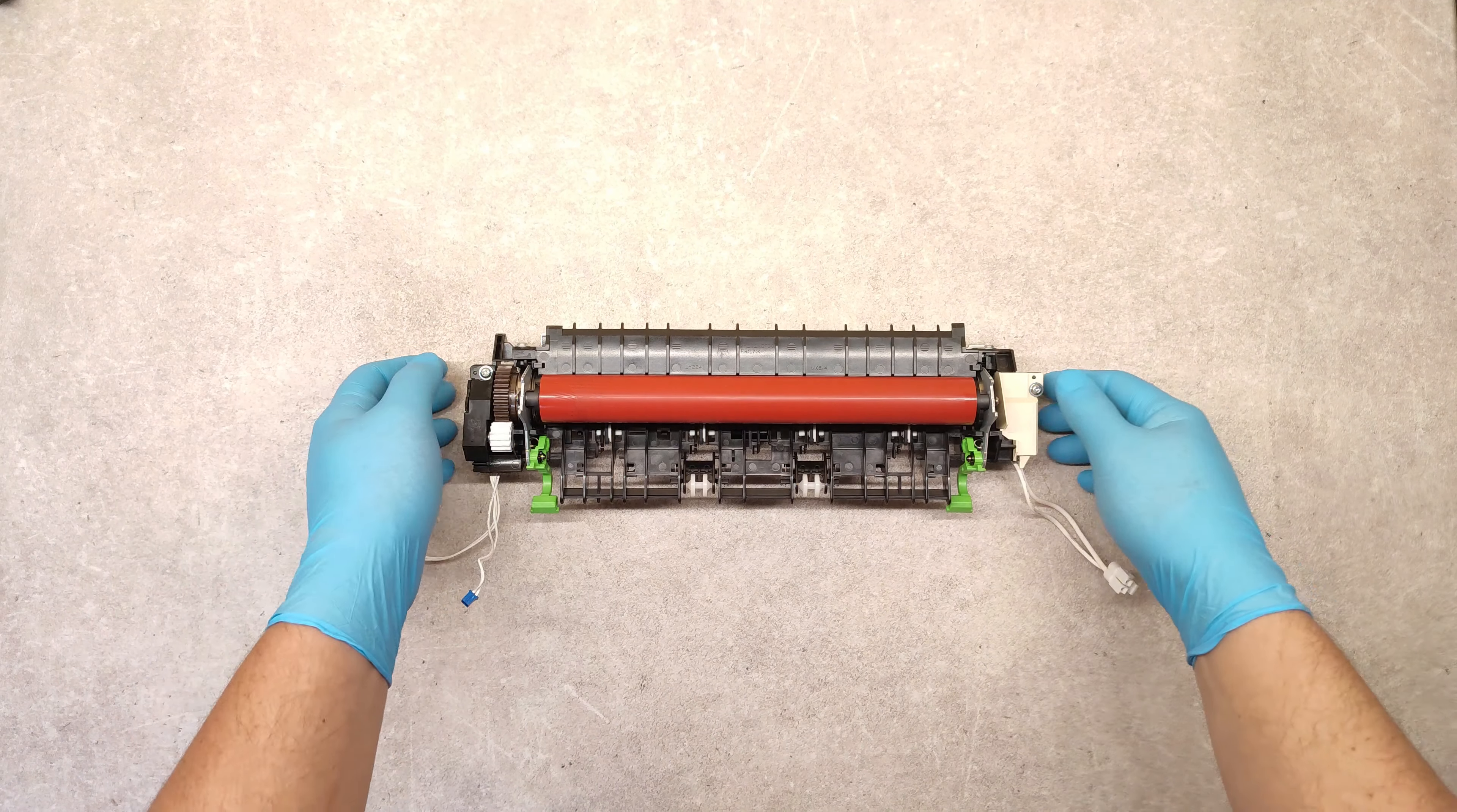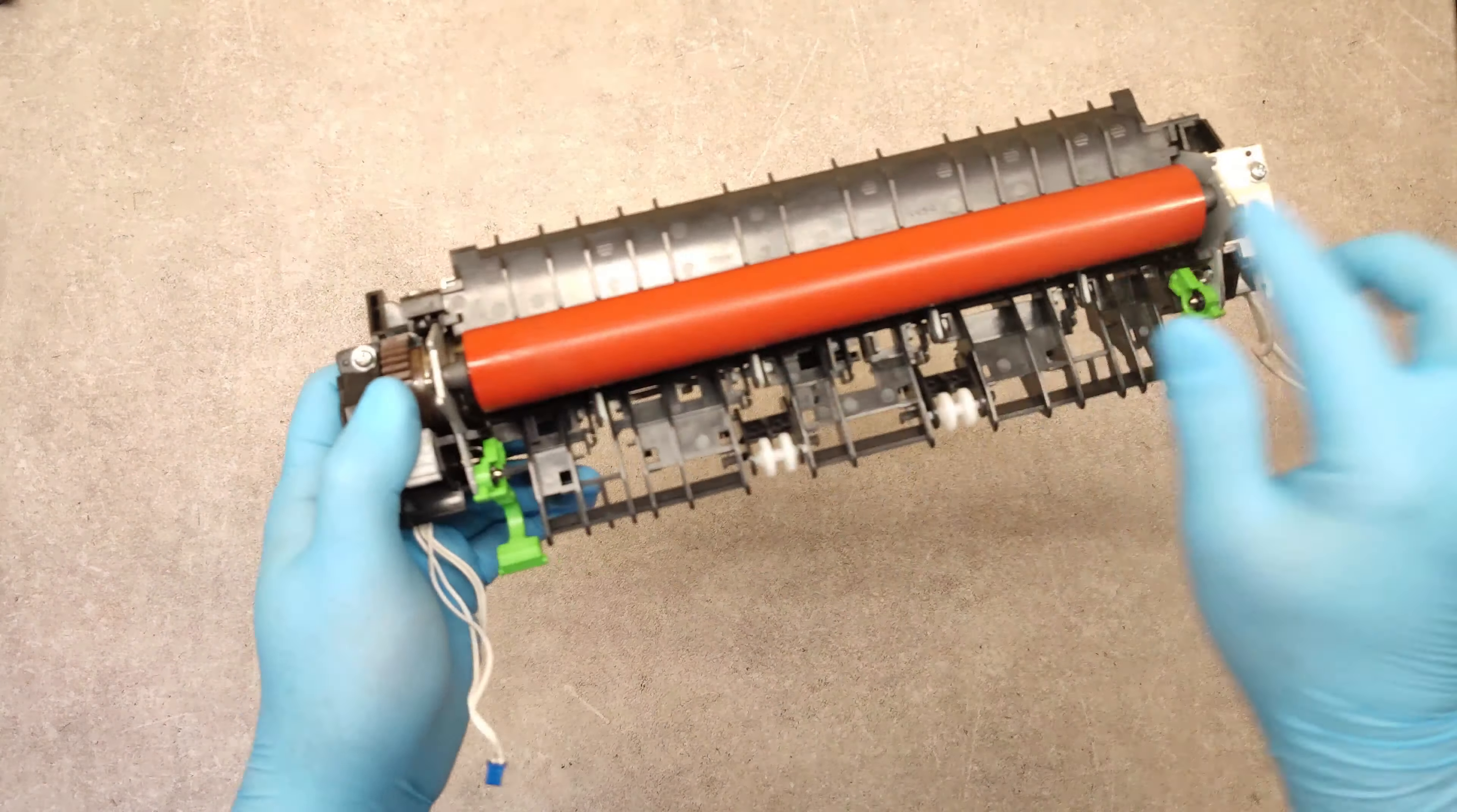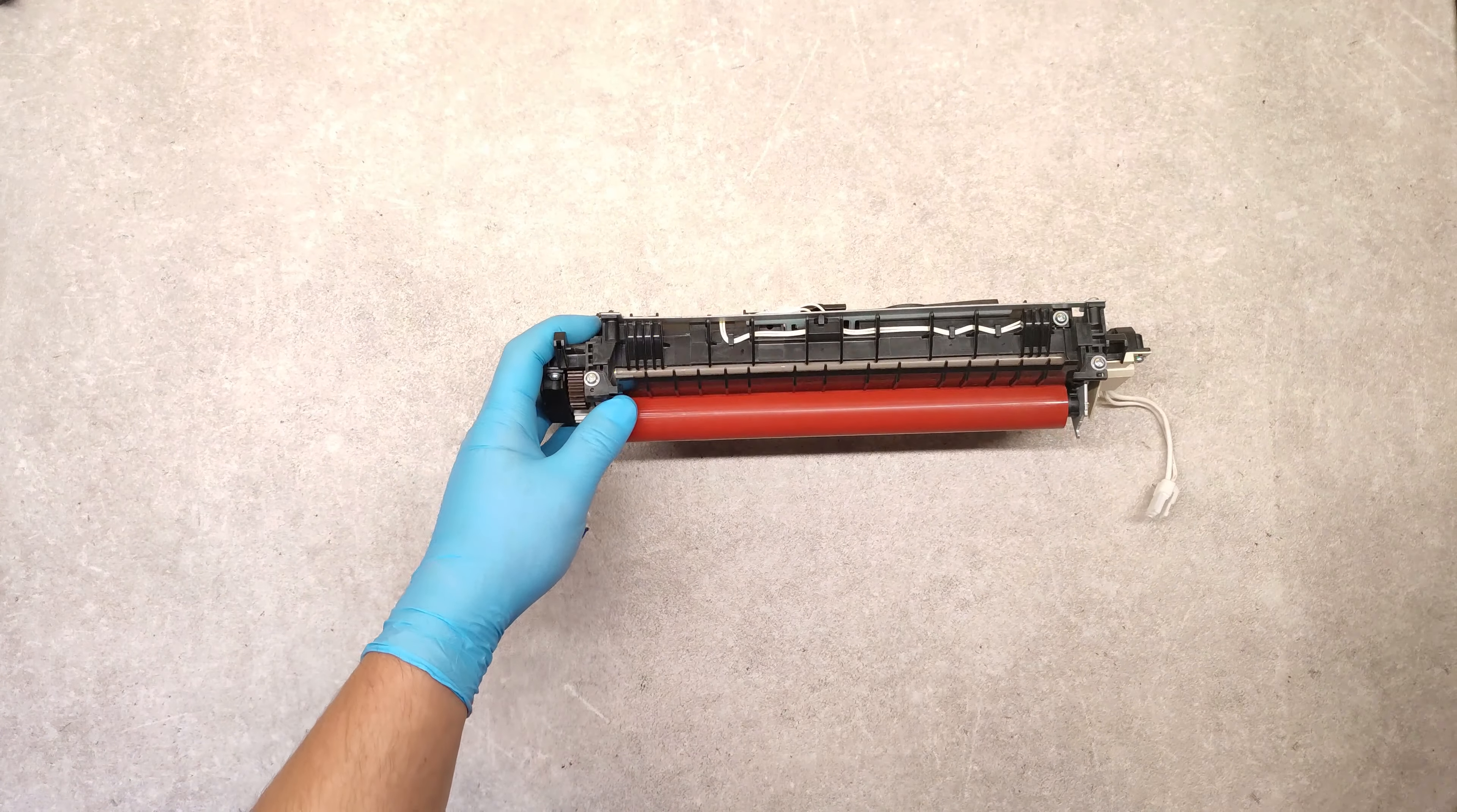Hello friends. We have here a fuser unit of Brother DCP device and we have to replace this lower pressure roller and this fusing roller below. So let's start.